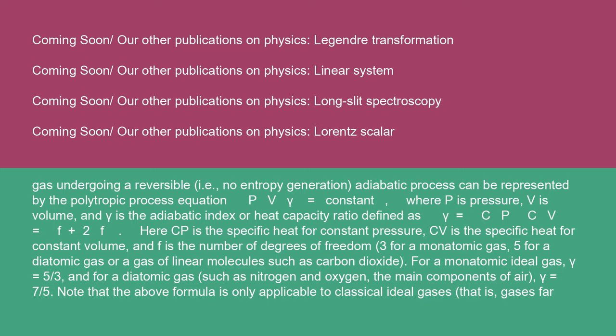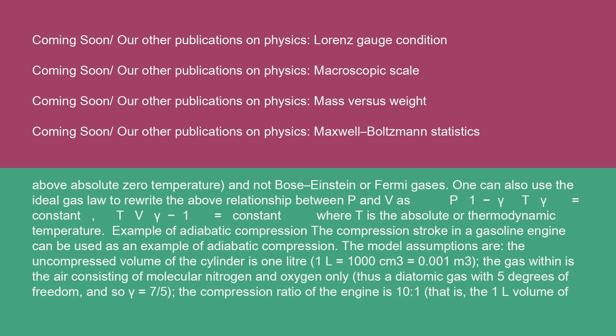Note that the above formula is only applicable to classical ideal gases — that is, gases far above absolute zero temperature — and not Bose-Einstein or Fermi gases. One can also use the ideal gas law to rewrite the above relationship between P and V as P^(1−γ) T^γ = constant, or TV^(γ−1) = constant, where T is the absolute or thermodynamic temperature.